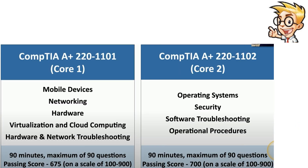The Core 1 exam consists of five different domains: mobile devices, networking, hardware, virtualization and cloud computing, and hardware and network troubleshooting. The Core 2 focuses more on operating systems and software.